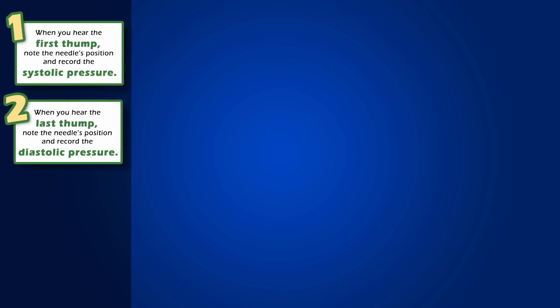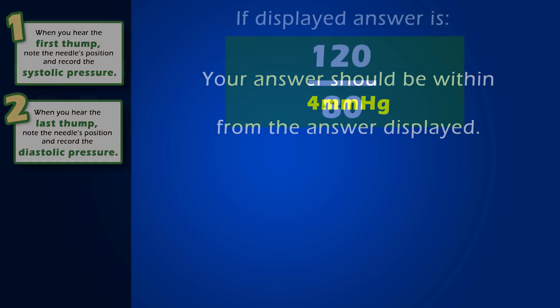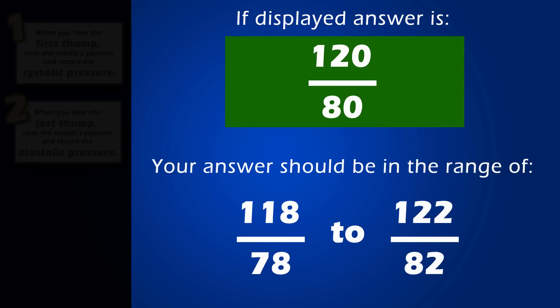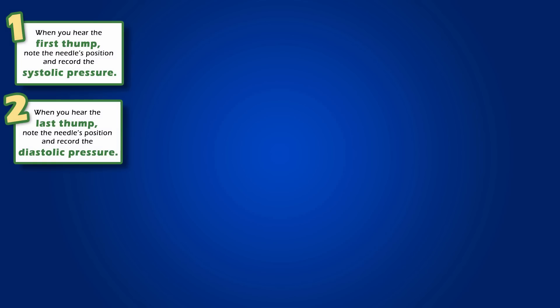Let's practice applying these two steps. Please note that your answer may be slightly different from what's displayed, but that's okay. As long as your answer is within 4 mmHg, your answers are still considered accurate. For example, if the displayed answer is 120 over 80, but your answer falls somewhere in the range of 118 over 78 through 122 over 82, your answer is still considered accurate. Matching the displayed answer is the goal. Listen closely and write down your answers — I will reveal the correct answer once the simulation ends. Here's the first one.